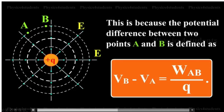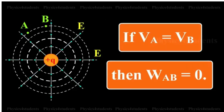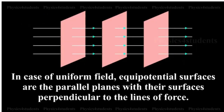Since A and B are located at the same equipotential line, Va equals Vb, and thus the work done to bring a charge from A to B is equal to zero. The electric field lines must be normal to an equipotential surface. In the case of a uniform field, the equipotential surfaces are parallel planes with their surfaces perpendicular to the lines of force.